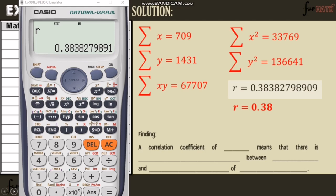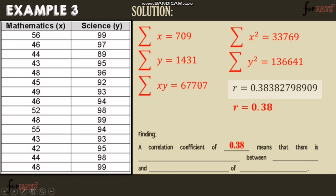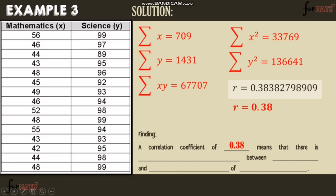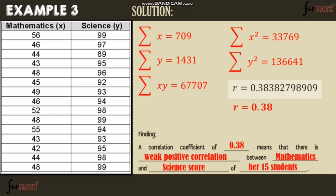Looking up 0.38 in the interpretation table, it falls under weak positive correlation. Therefore, a correlation coefficient of 0.38 means there is a weak positive correlation between mathematics score and science score of the 15 students.